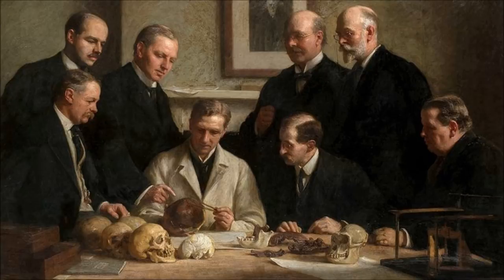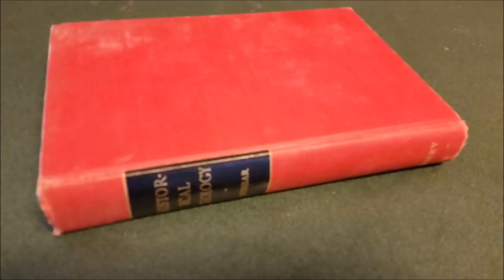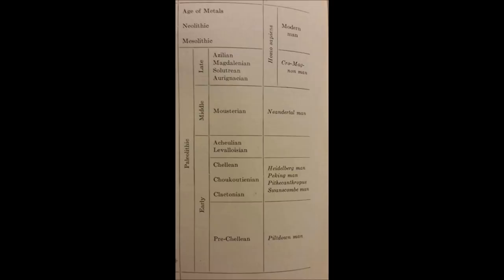British anthropologists and much of the British scientific community at the time were very dismayed at fossil evidence for early man coming from Asia and Africa. Piltdown Man was a source of national pride for those who fell for the hoax, but it wasn't widely accepted in the international community. My copy of Historical Geology by Carl Dunbar, originally published in 1915, confirms this — Piltdown Man was only mentioned once in a chart, while fossil hominids like Australopithecus africanus and Homo erectus were discussed in much detail across multiple pages.